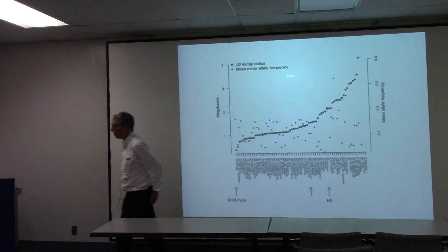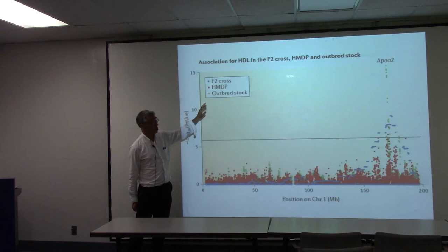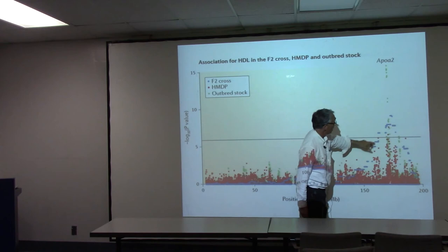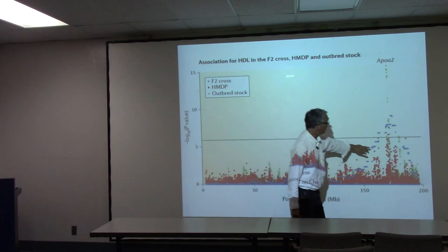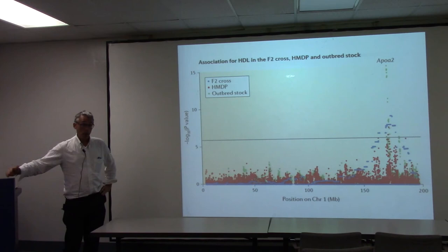We've been working with a stock from up here. To finish this first part of the presentation: this is from a figure of a paper I wrote with Eliezer showing three strategies — the F2 cross, the heterogeneous stock equivalent as the intermediate, and then the outbred stocks. This is the locus we're mapping at the end of chromosome 1. The blue maps it okay but with a broad peak; the red does pretty well; but the green — the outbred stock — does best. So that convinced us this would be worth trying.